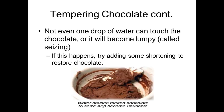Another caution to be aware of when melting or tempering chocolate is that if chocolate gets even a drop of water, it can become lumpy. This lumpiness is called seizing. If this happens, you can try adding some shortening or paraffin wax, which will restore the chocolate and bring it back to its smooth texture.